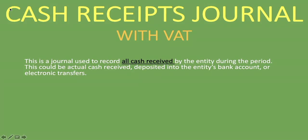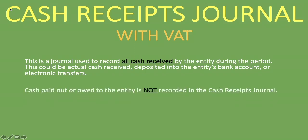Whenever you have received cash as a company you will record it in the cash receipts journal. So when you see a scenario where you are paying cash, or someone bought something from you on credit and did not pay you, that does not go into the cash receipts journal. You're only concerned about receiving money. Cash paid out or owed to the entity is not recorded in the cash receipts journal.